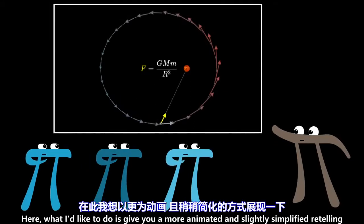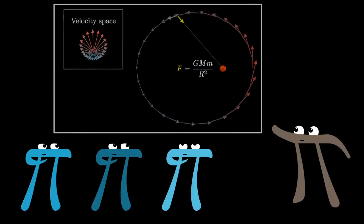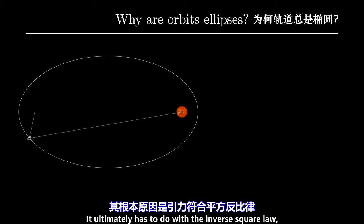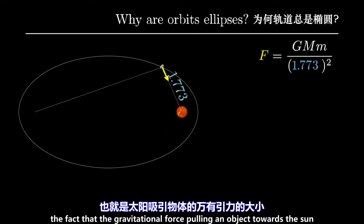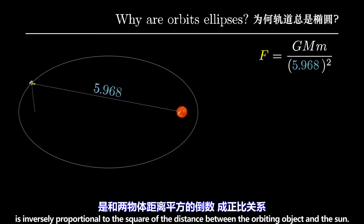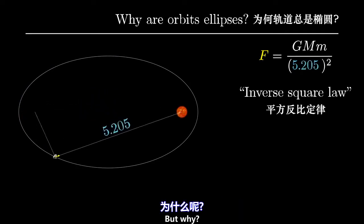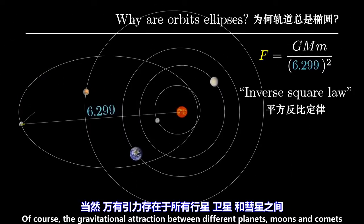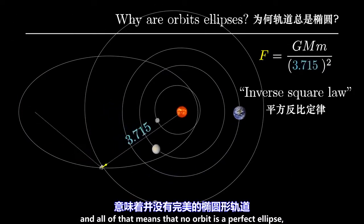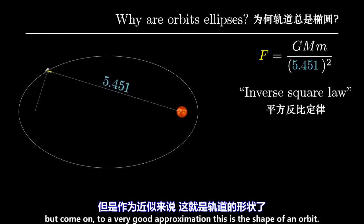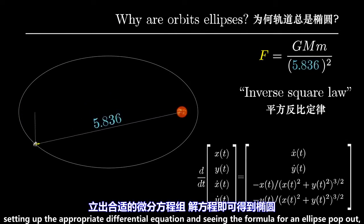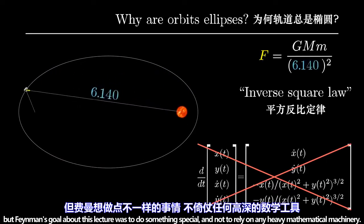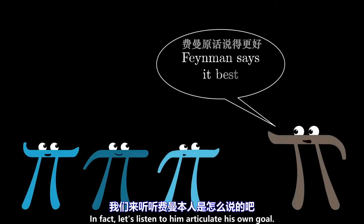Here, what I'd like to do is give a more animated and more simplified retelling of the argument that Feynman was presenting. The lecture itself is about why planets, and other astronomical objects, orbit the sun in ellipses. It ultimately has to do with the inverse square law — the fact that the gravitational force pulling an object towards the sun is inversely proportional to the square of the distance between that object and the sun. But why? How exactly does that law give rise to an ellipse of all shapes? Of course, the gravitational attractions between different planets and moons and comets means that no orbit is a perfect ellipse, but to a very good approximation, this is the shape of an orbit. You could solve this analytically, setting up the appropriate differential equation and seeing the formula for an ellipse pop out. But Feynman's goal with this lecture was to do something special, and to not rely on any heavy mathematical machinery. In fact, let's listen to him articulate his own goal.